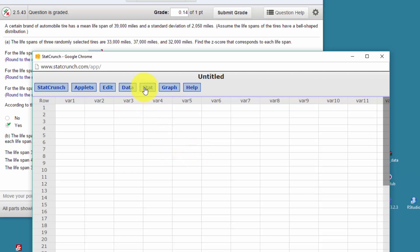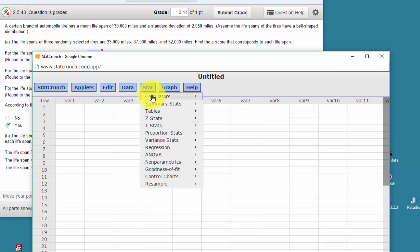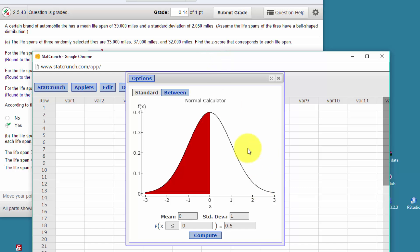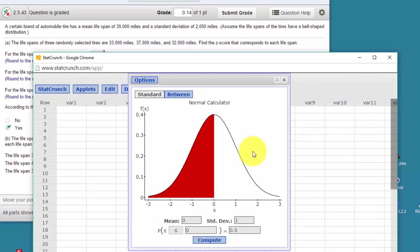We click on Stat, Calculators, Normal, and we bring up this dialog box.